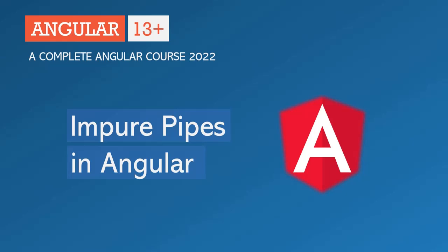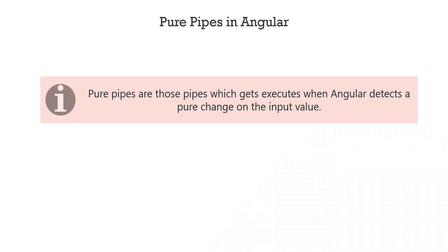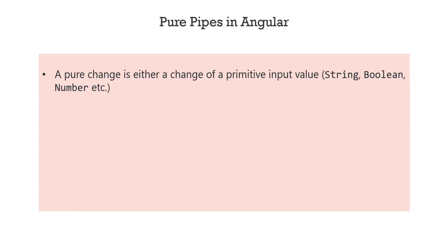In the last lecture, we learned what is a pure pipe in Angular. Pure pipes are those pipes which get executed when Angular detects a pure change on the input value. A pure change is when the input type on which we are using the pipe is of primitive type, and when the value of that primitive input changes, that is a pure change.